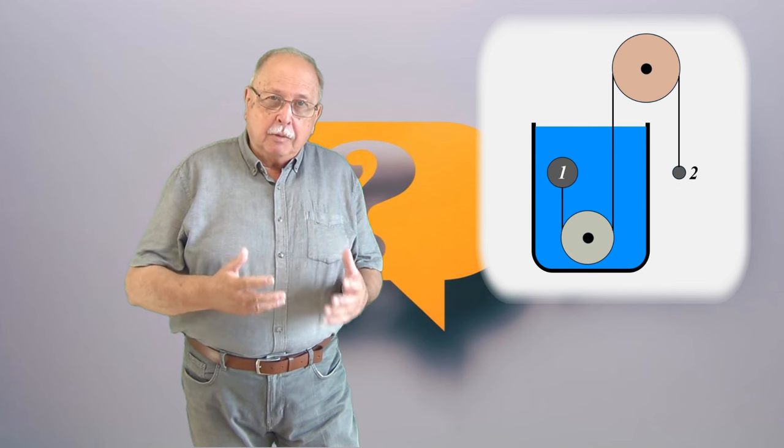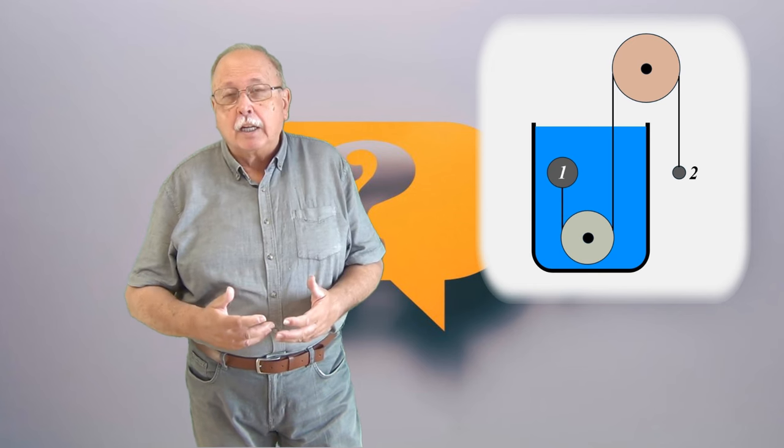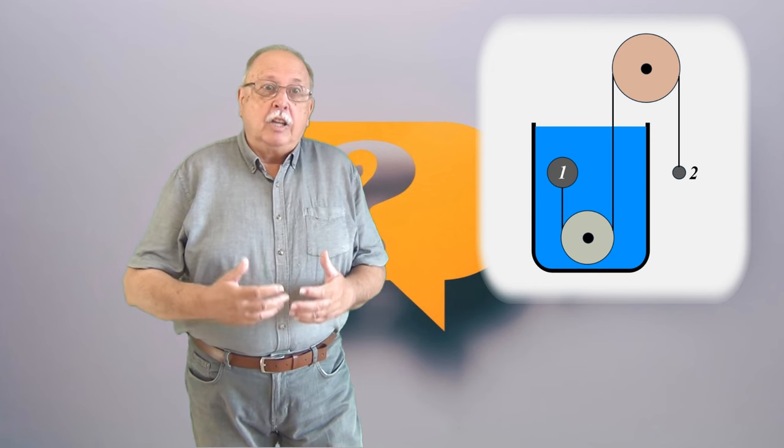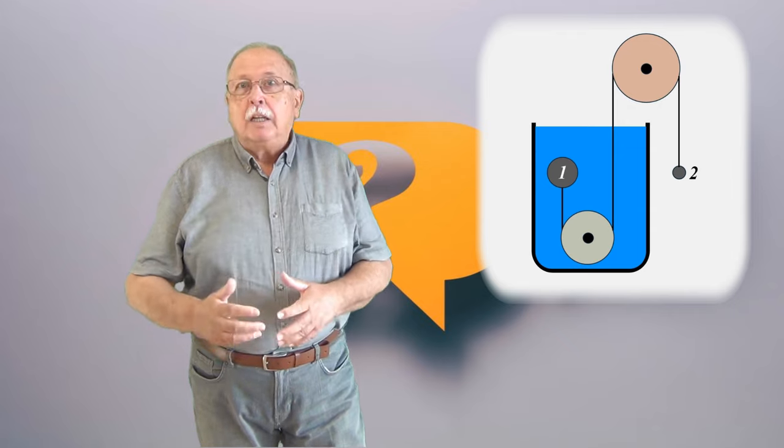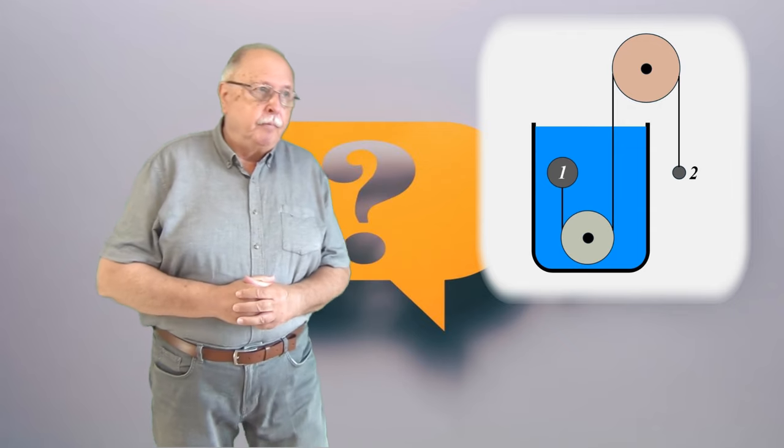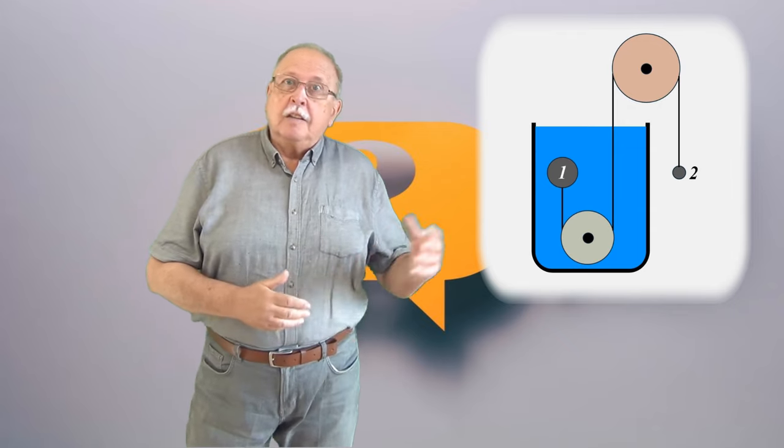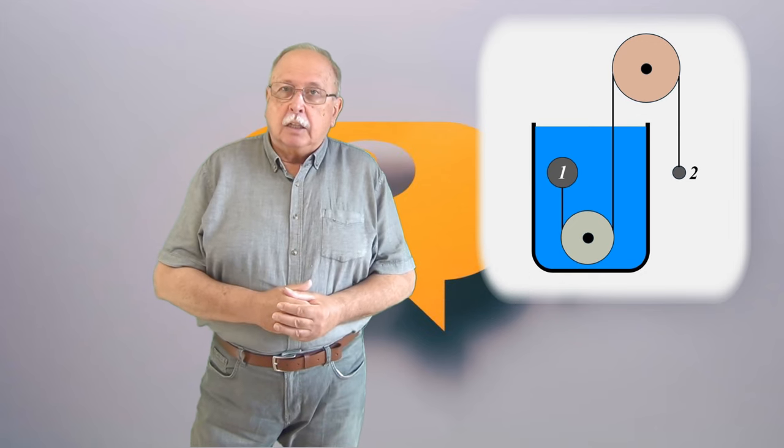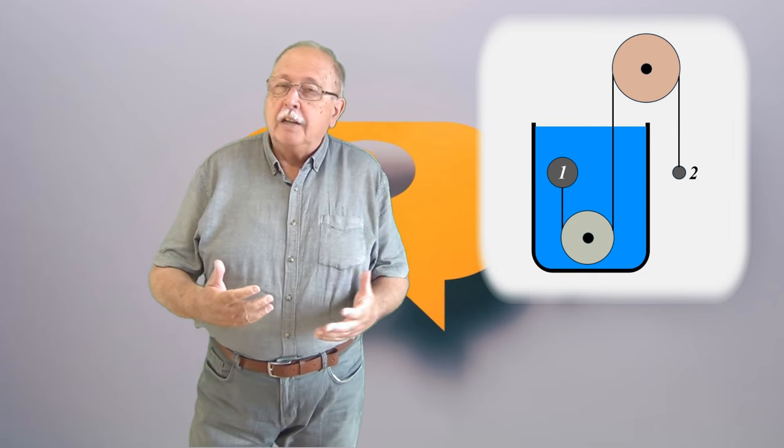Ceea ce înseamnă că forța arhimedică care acționează asupra ei este mai mare decât greutatea ei, deci densitatea ei este mai mică decât densitatea apei. În consecință și densitatea bilei 2 este mai mică decât densitatea apei, deoarece cele două bile sunt confecționate din același material.